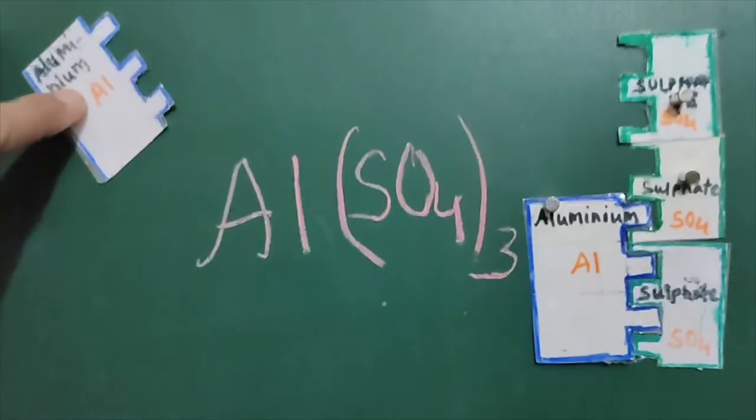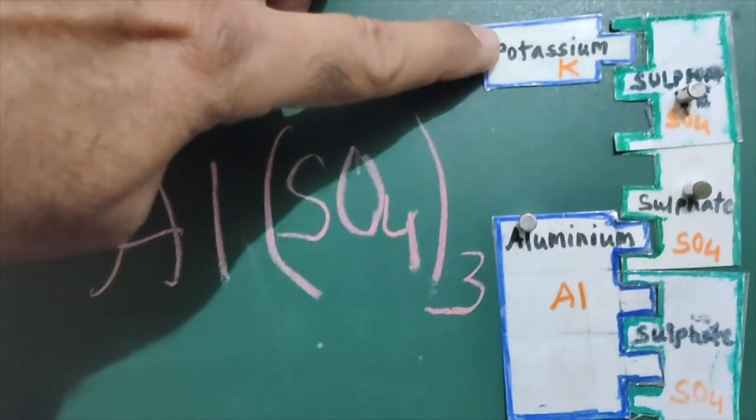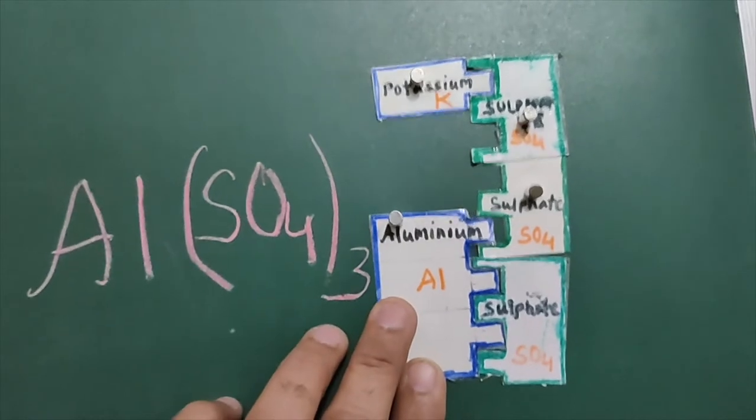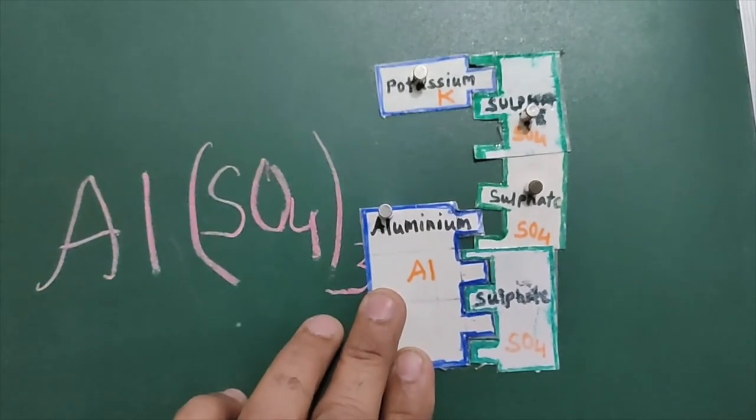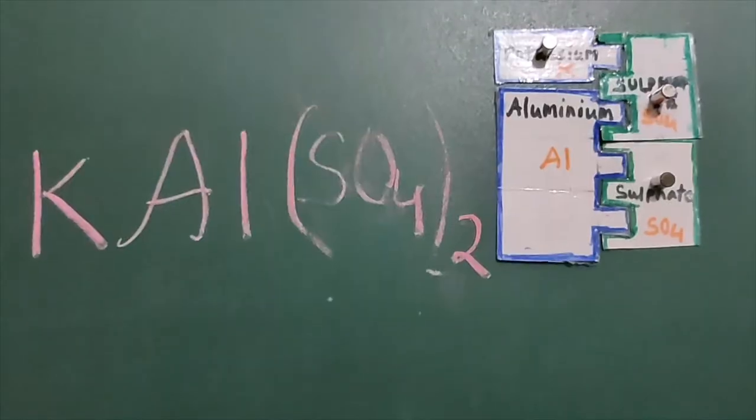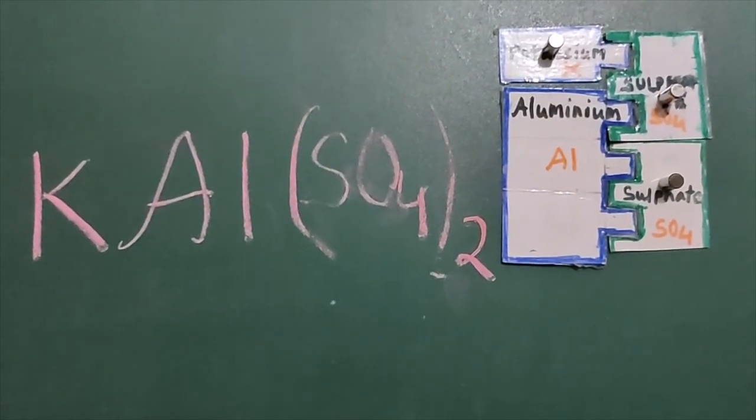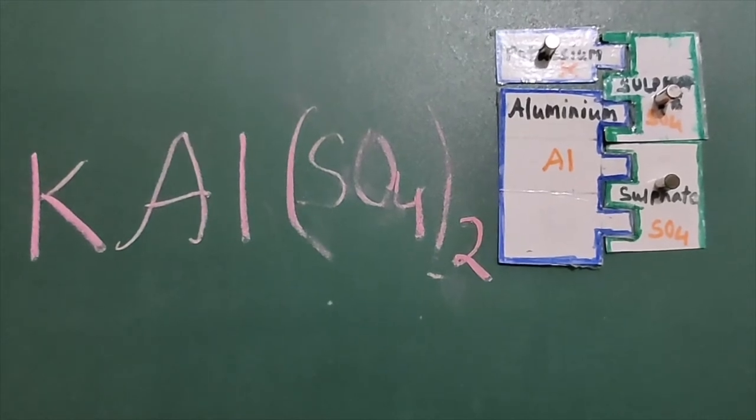Removing one aluminum. Now satisfying three valences, one by potassium ion. Shifting aluminum above. Now this will be potassium aluminum sulfate, a mineral of aluminum.